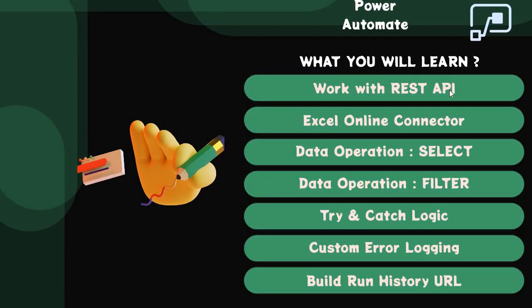The topics we are going to cover include: working with the REST API in Power Automate, using the Excel Online connector to fetch data from Excel, and data operations — specifically how to use the Select action from the Data Operation connector. Along with Select, we are going to learn about the Filter action in Power Automate. These two actions are very important when working with data within Power Automate.